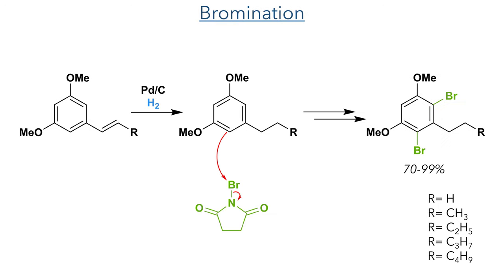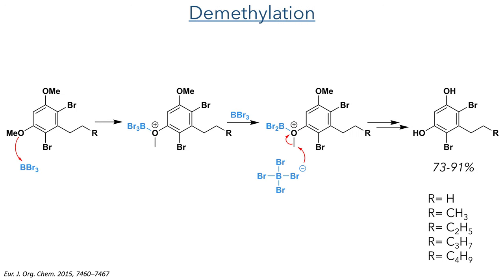The aromatic ring then underwent electrophilic aromatic bromination with NBS to form the dibrominated product in quite good yields. To produce the hydroxyl groups required for the target molecules, the ethers were demethylated using boron tribromide. This acts as a Lewis acid and coordinates to the oxygen atom, where one bromide is abstracted by another molecule of BBr3 to form boron tetrabromide, which can act as a nucleophile and displace the methyl group in an SN2 fashion to form the desired hydroxyl group.